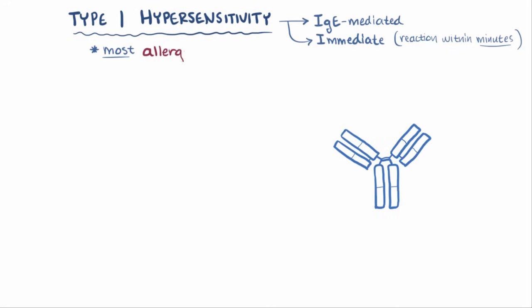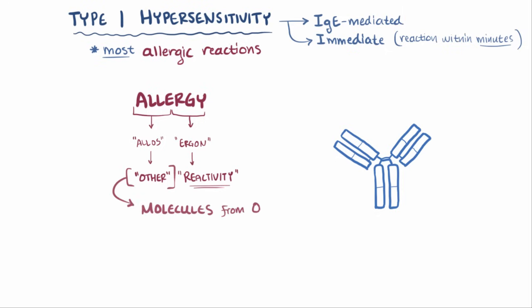So most allergic reactions are IgE-mediated, and therefore most allergies are type 1 hypersensitivity reactions. Allergy comes from the Greek allos, which roughly means other, and ergon, which means reactivity. Essentially, allergies are reactions to molecules from outside your own body that most people don't react to.